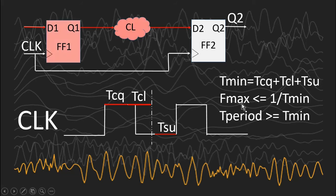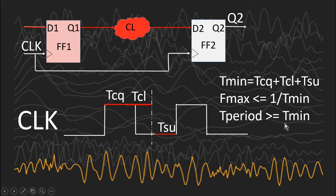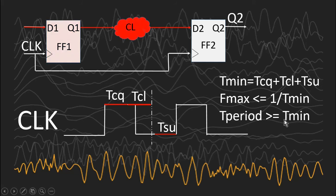We also know that frequency is always inversely proportional to the time period of operation. From this equation we can easily calculate the maximum operating frequency once we have calculated T_min, which is the minimum period of operation. This design is going to work for all frequencies where the time period is greater than T_min. Now let us assume the case where we apply a clock having a time period less than this calculated T_min — in that case the next active edge comes somewhere here.